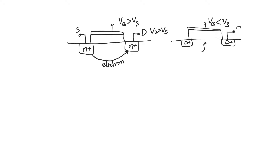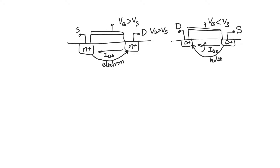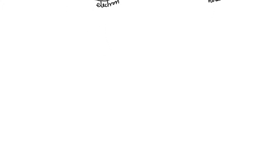In the NMOS, when we apply a positive voltage to one of the two terminals, that becomes the drain. V-drain greater than V-source causes the source to source electrons and the drain to drain electrons, so electron flow is from source to drain. In the PMOS, when we apply a positive voltage, that terminal becomes the source, and the lower terminal becomes the drain, so holes flow from the higher source to the lower drain. Current in an NMOS flows against electron flow — from drain to source — whereas current in a PMOS flows from source to drain, giving us I_SD.